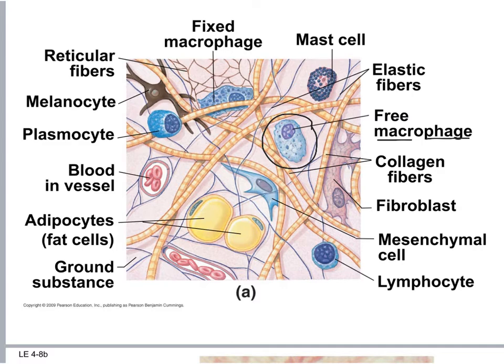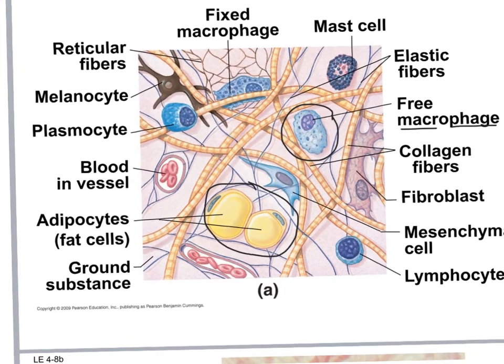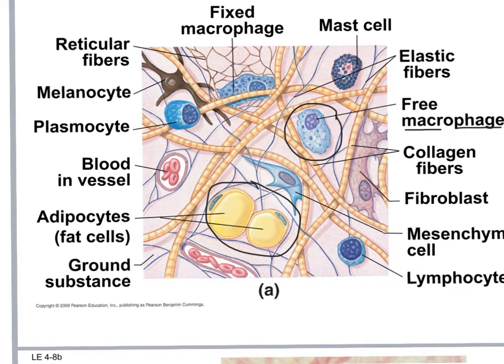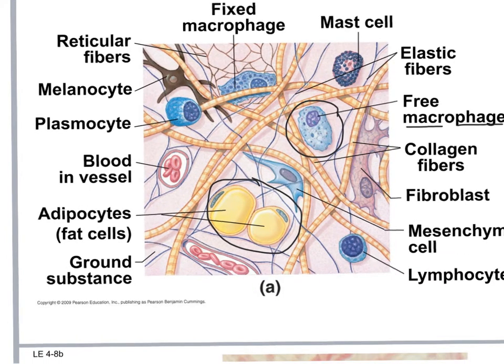We also see adipose cells, or adipocytes. Adipocytes look like a class ring because there are so many triglycerides inside that the nucleus is pushed off to the side. The rest of the cell is filled with triglycerides. They're yellow because fat is yellow. Adipocytes store energy — they're storing triglycerides.